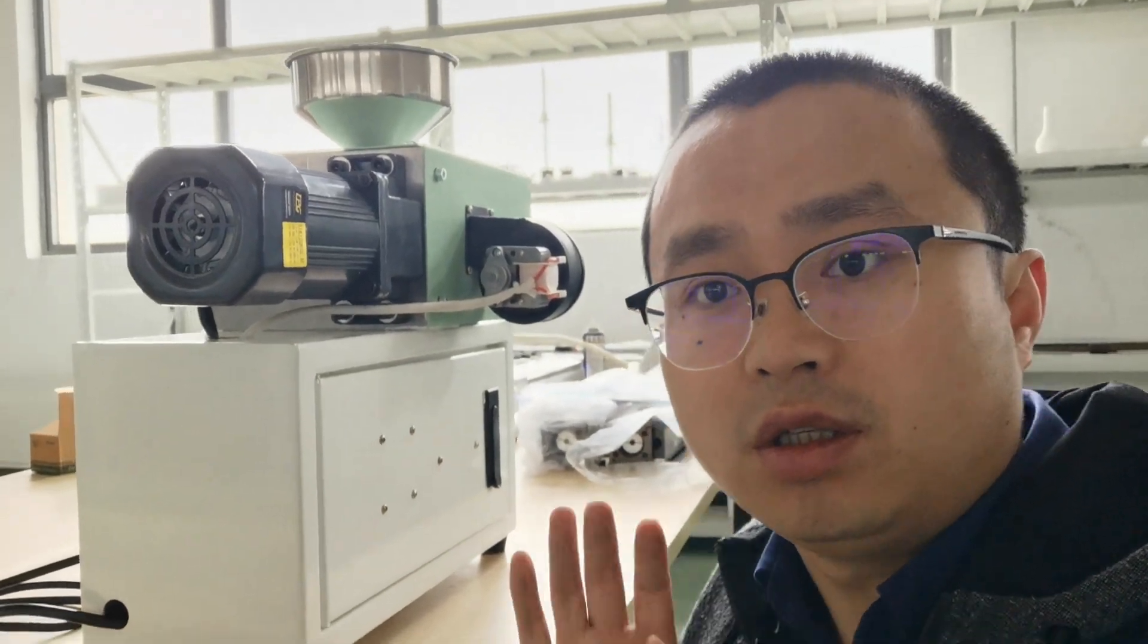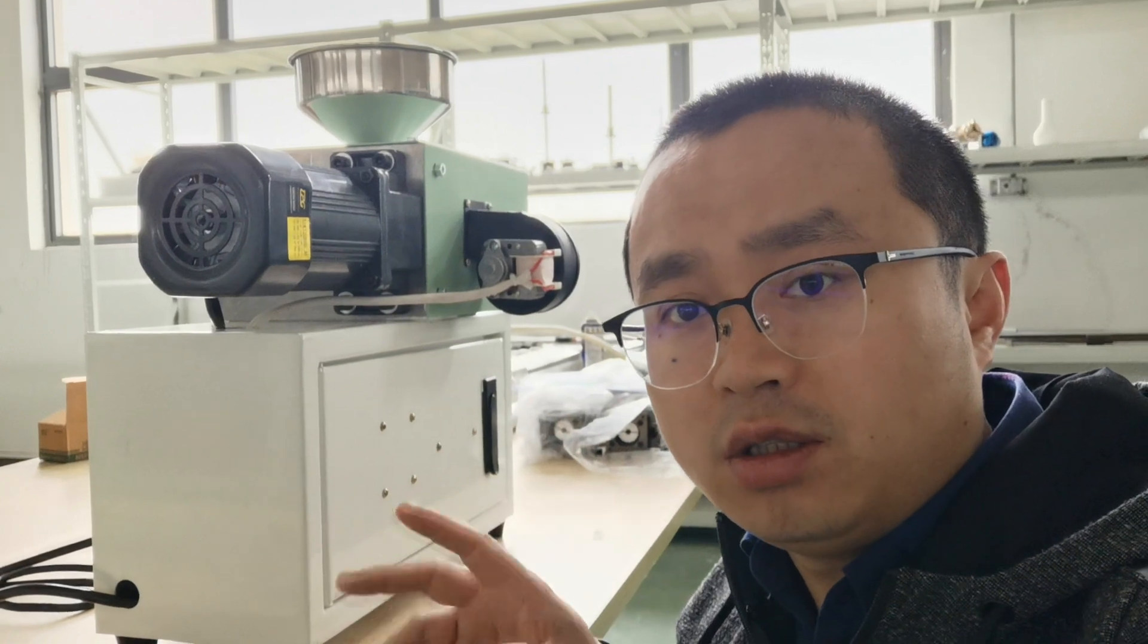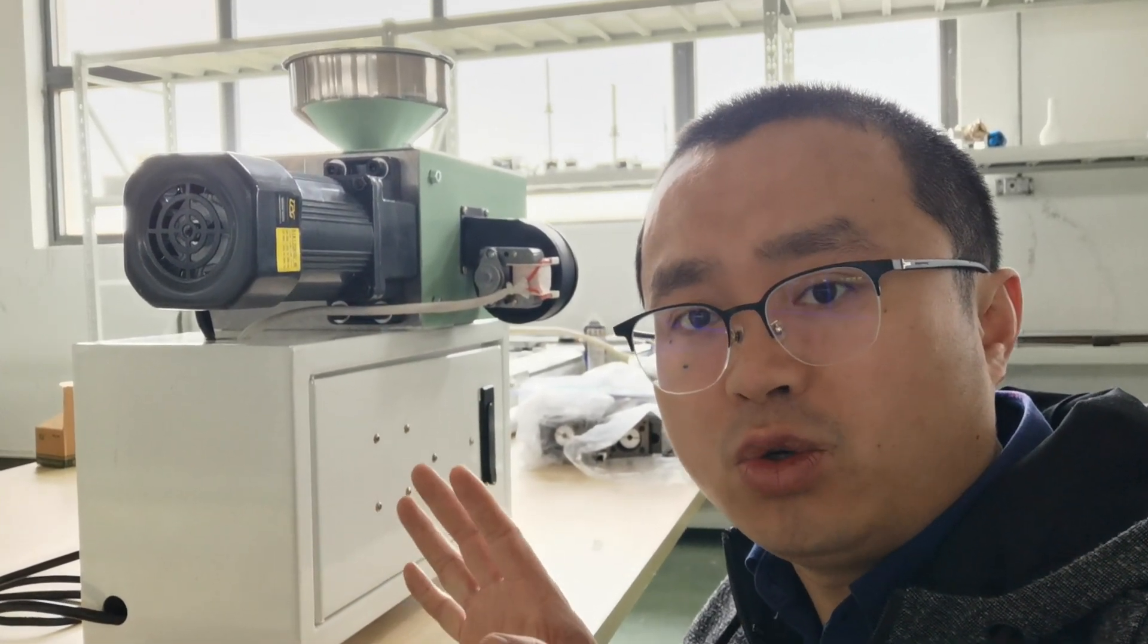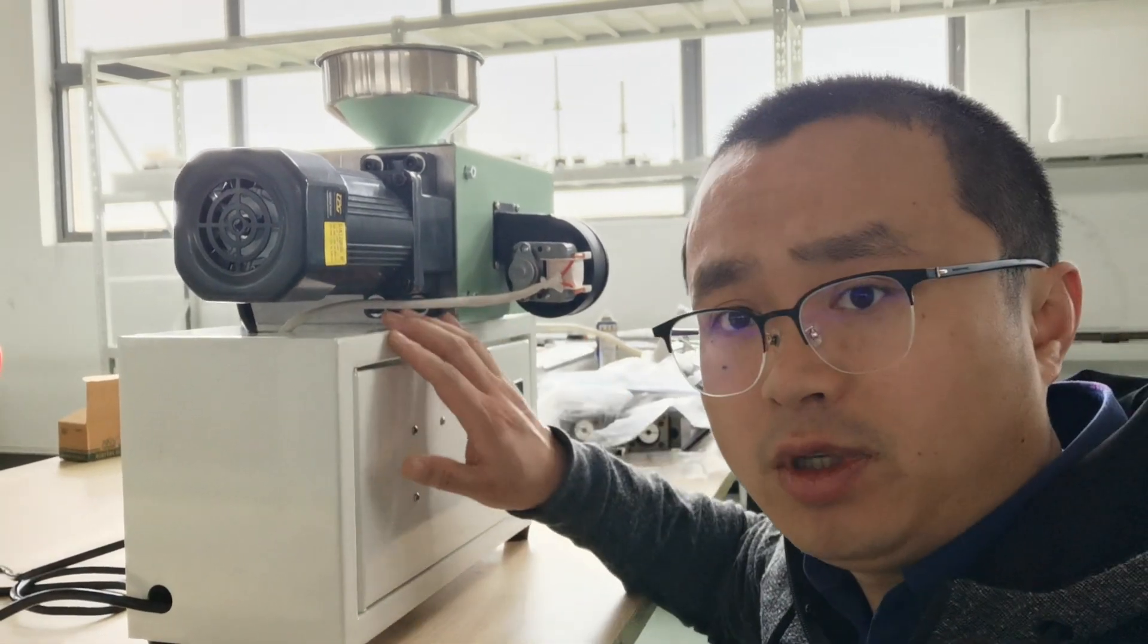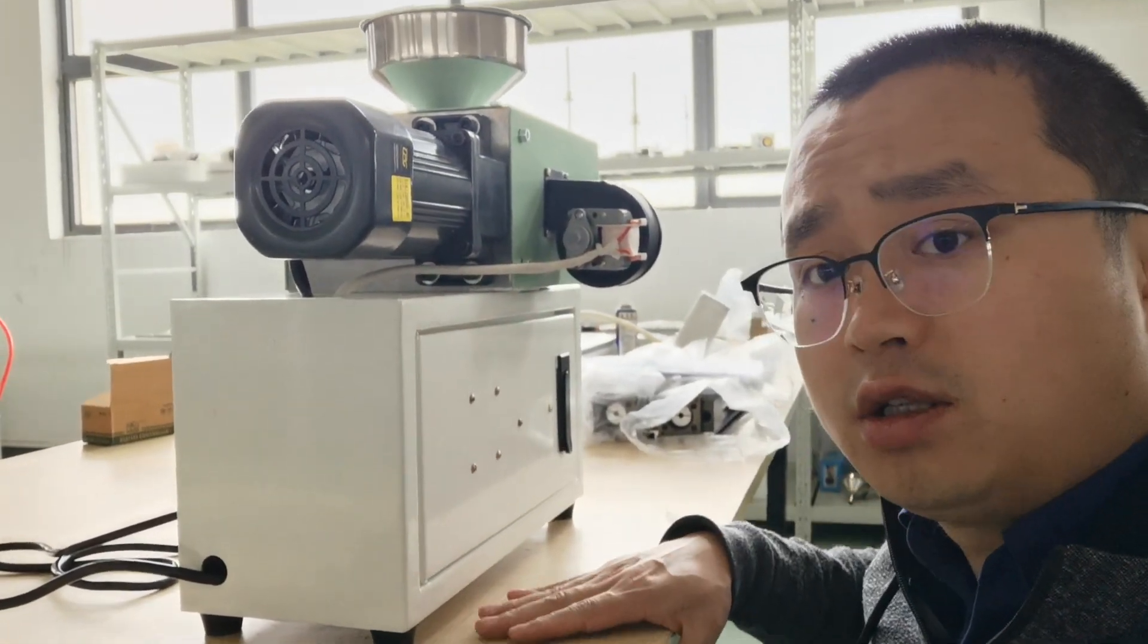Hi, this is Tiger from Robotic. Here you can see our new design, the SJ20 parallel twin screw extruder. That's the top tie. We put it on the desk.